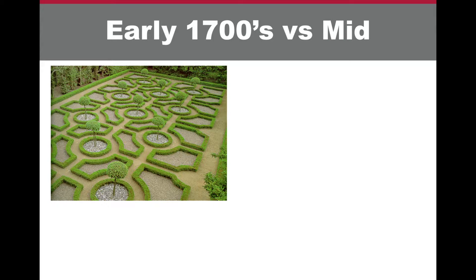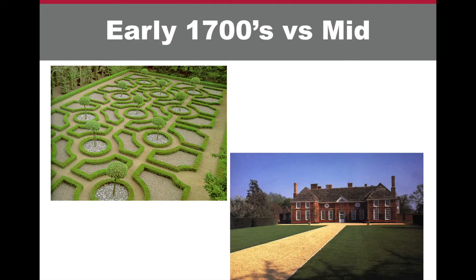In the early 1700s, English gardens were influenced by French garden design. Then, because of political conflicts between England and France, many gardens were destroyed and a new naturalistic approach was developed.